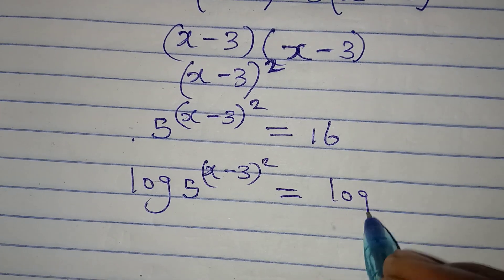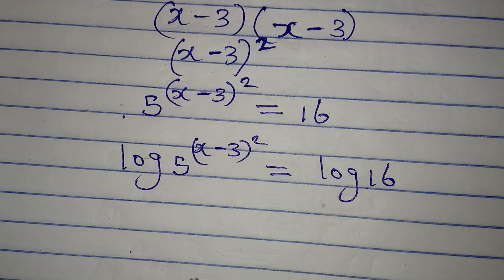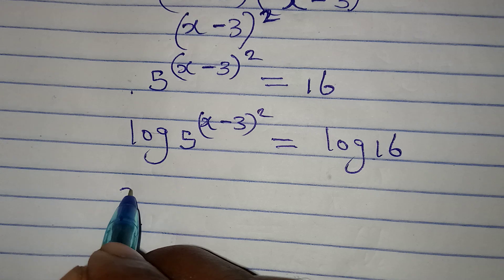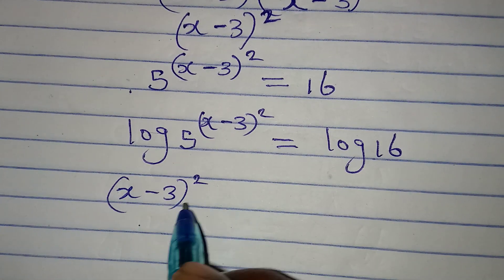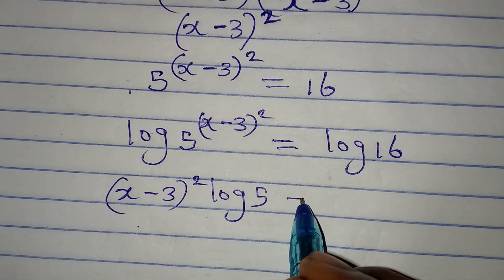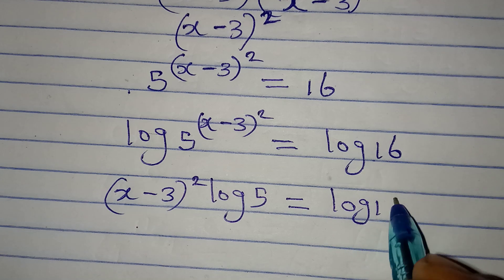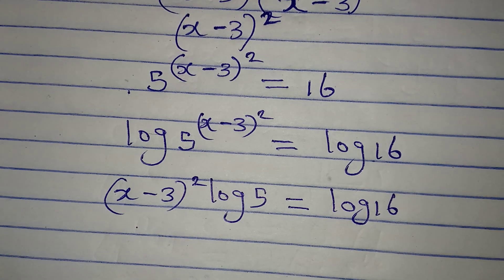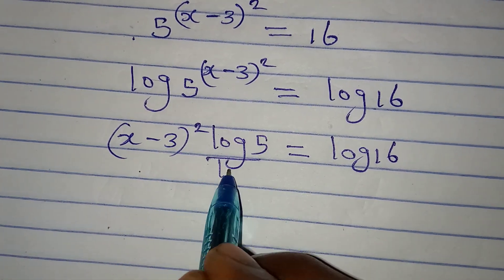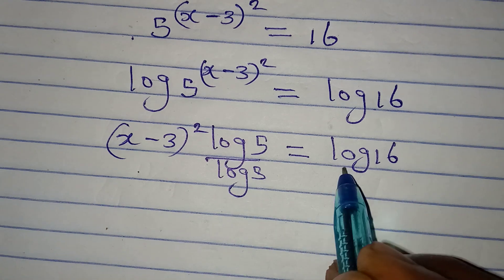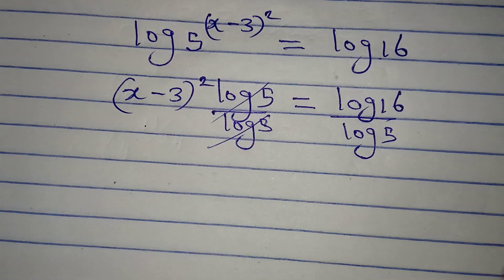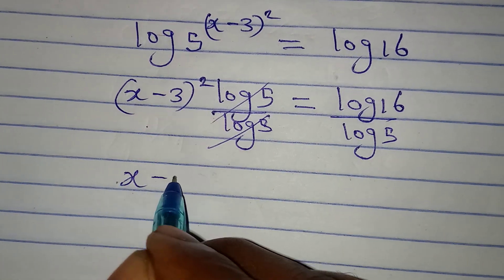So I have log of 5 to the power of x minus 3 squared equal to log 16. According to the log law, the power can come down in front, giving x minus 3 squared times log 5 equal to log 16. To make x minus 3 squared the subject, I divide both sides by log 5, which removes log 5 from the left side.